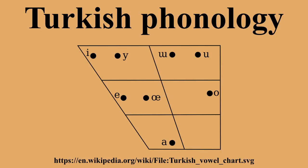Consonant assimilation. Because of assimilation, an initial voiced consonant of a suffix is devoiced when the word it is attached to ends in a voiceless consonant. For example, the locative of SEV is SEVDE, but SEF has locative SEFTA. The diminutive of AD is ADCIK, but it has the diminutive ADCIK.